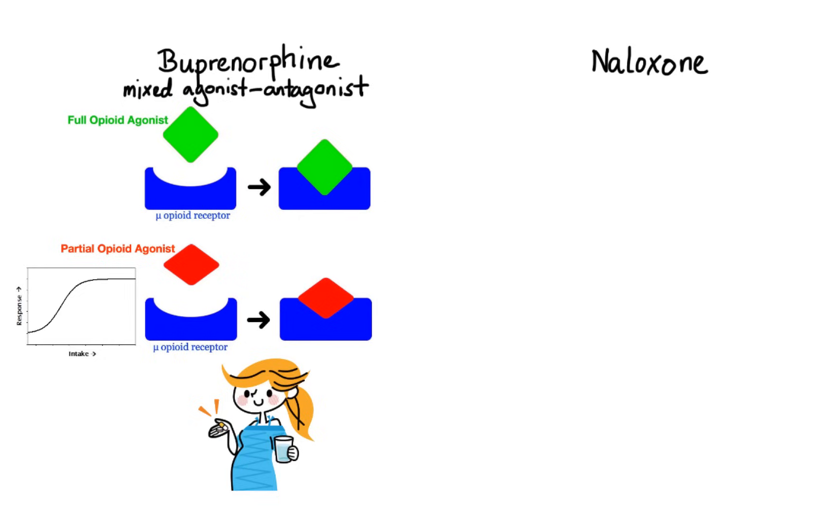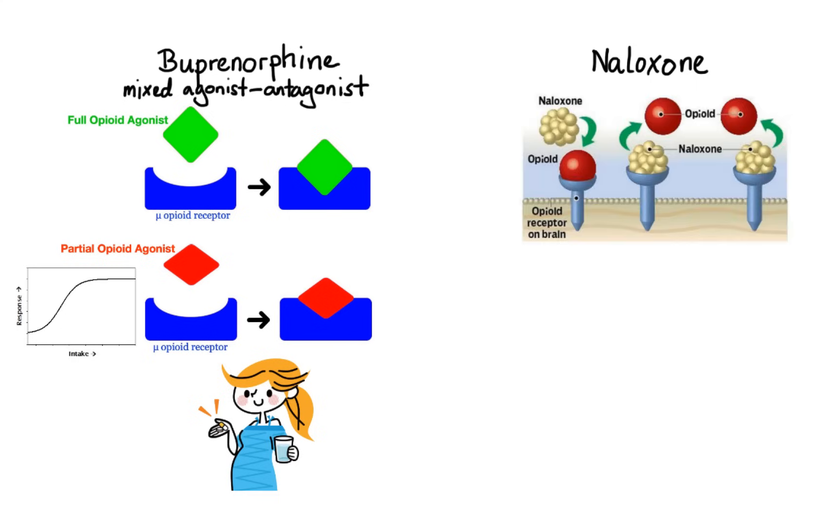Naloxone works by knocking off the opioids attached to the receptors in the brain, thereby temporarily stopping the opioid effect. This is possible because naloxone has a stronger affinity for opioid receptors and thus is able to kick the opioids out and block them from attaching again. So during an emergency situation, when a person's breathing has slowed down or stopped due to an opioid overdose, naloxone can quickly restore normal breathing and save the life.